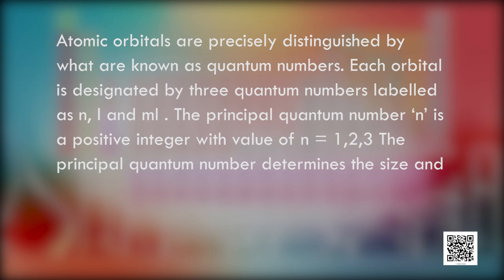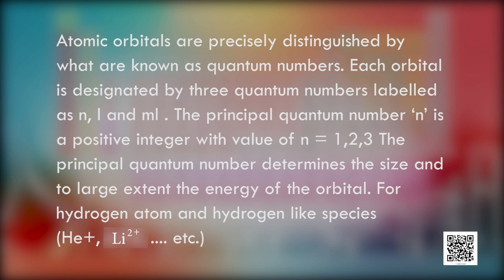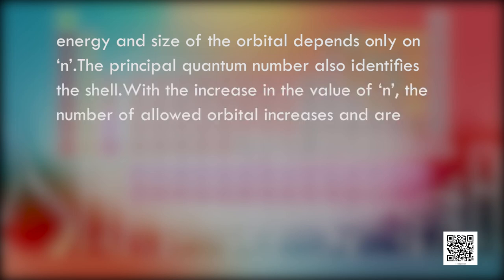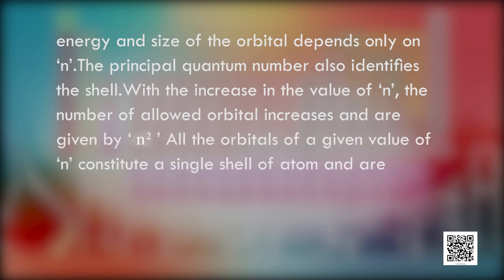The principal quantum number N is a positive integer with values N = 1, 2, 3, and so on to infinity. The principal quantum number determines the size and, to a large extent, the energy of the orbital. For hydrogen atom and hydrogen-like species such as He+ and Li2+, energy and size of the orbital depend only on N. The principal quantum number also identifies the shell. With the increase in the value of N, the number of allowed orbitals increases and is given by N squared.